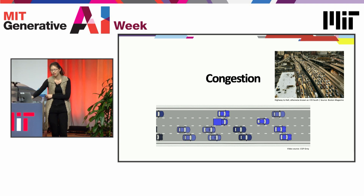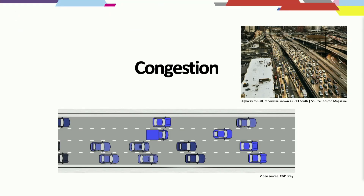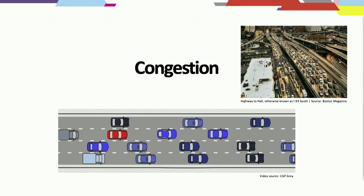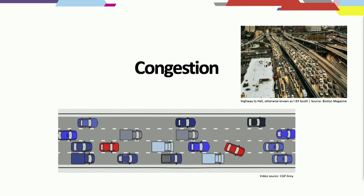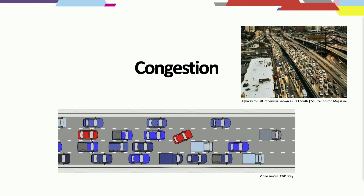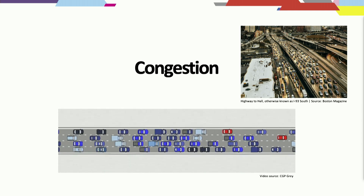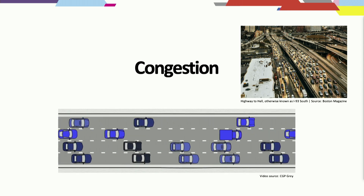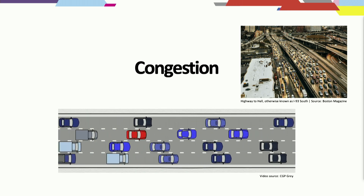Next I want to talk about traffic congestion and how Gen AI may be used to model and predict it. We're all familiar with what congestion costs: wasted time, greenhouse gas emissions, air pollution, and crashes. One prominent feature of congestion is that there are slowdowns that propagate through traffic flow — these are often called traffic waves. Even though all the cars move forwards in space, these waves actually move backwards in space.